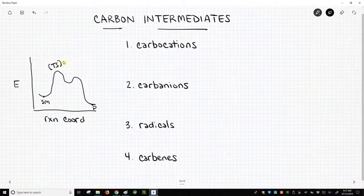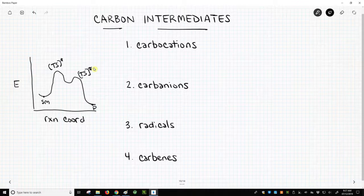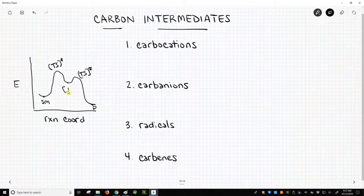We can label those. So we'd have transition state one and transition state two, and then we have this low energy point in the middle, this little dip. This is an intermediate.